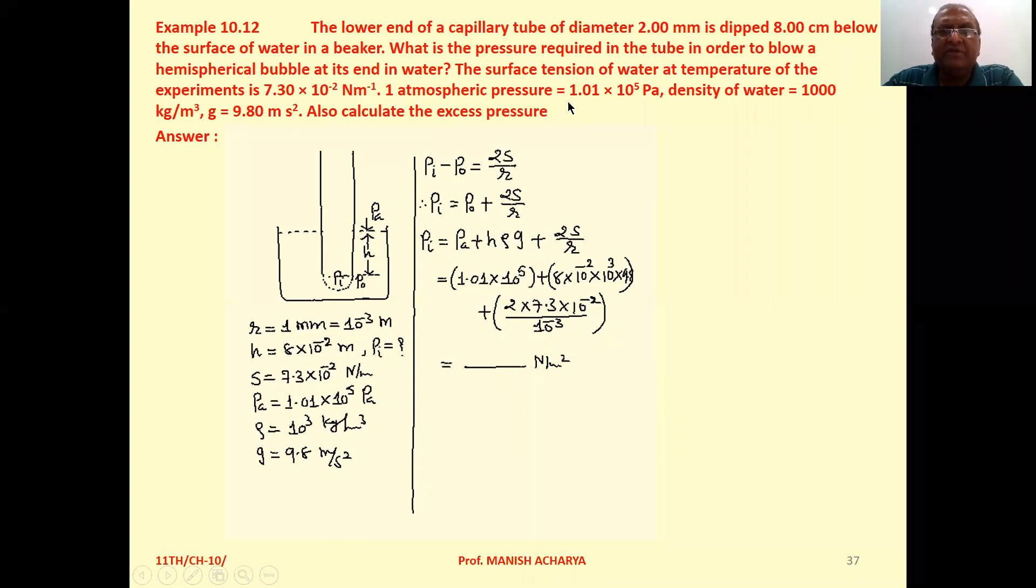One atmospheric pressure is equal to 1.01 × 10⁵ Pascal. Density of water is equal to 1000 kg/m³. g equals 9.8 m/s². Also calculate the excess pressure.